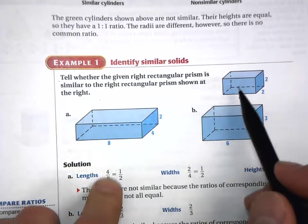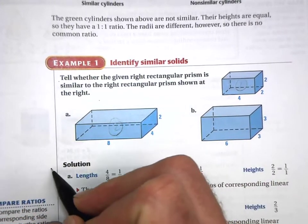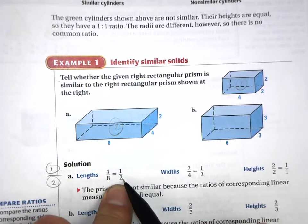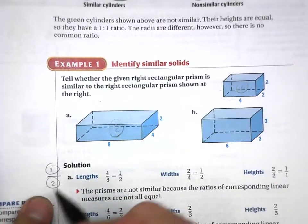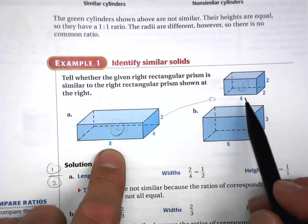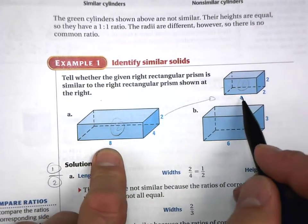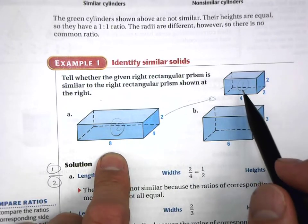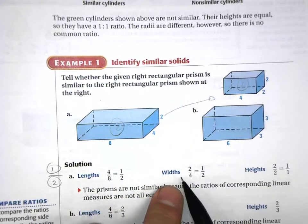The ratio of these lengths going one over two: one over two is four over eight, giving us a scale factor of one half going from solid two to solid one. But just because I can create one ratio does not mean these two solids are similar — all of the corresponding sides must have the same ratio. So let's compare the widths.